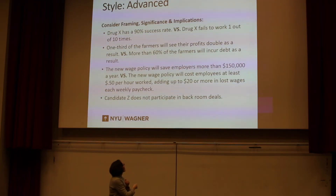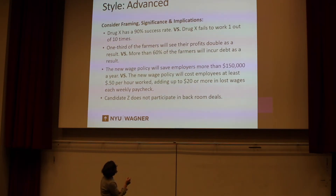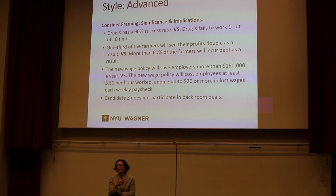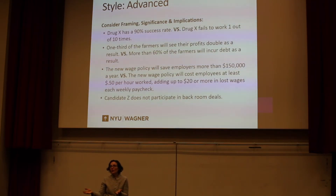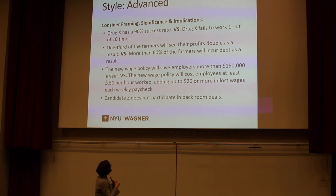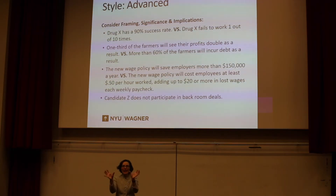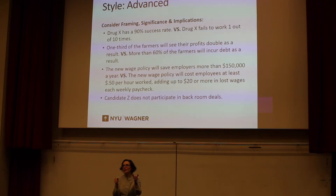Who you're writing for matters. 'The new wage policy will save employers more than $150,000 per year' — if you represent a business owners' association, that's great news. But if you're representing a union, the next detail changes everything: 'The new wage policy will cost employees at least 50 cents per hour, adding up to $20 more in lost wages each week.' It may be the same core data, but how you frame and present it speaks to what your agenda is, who you think should be winning, and what you want them to support or not support.